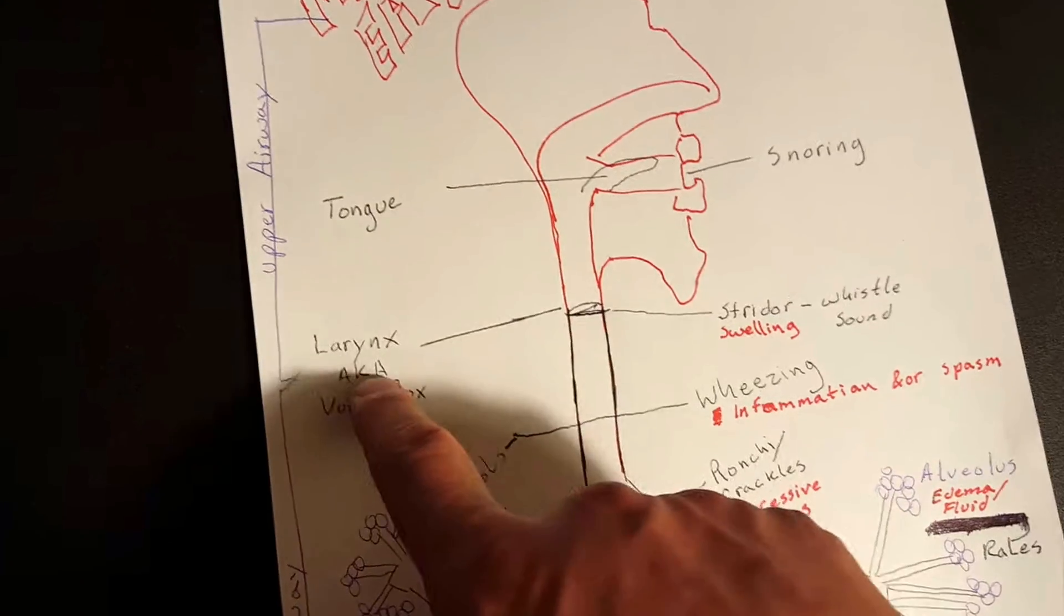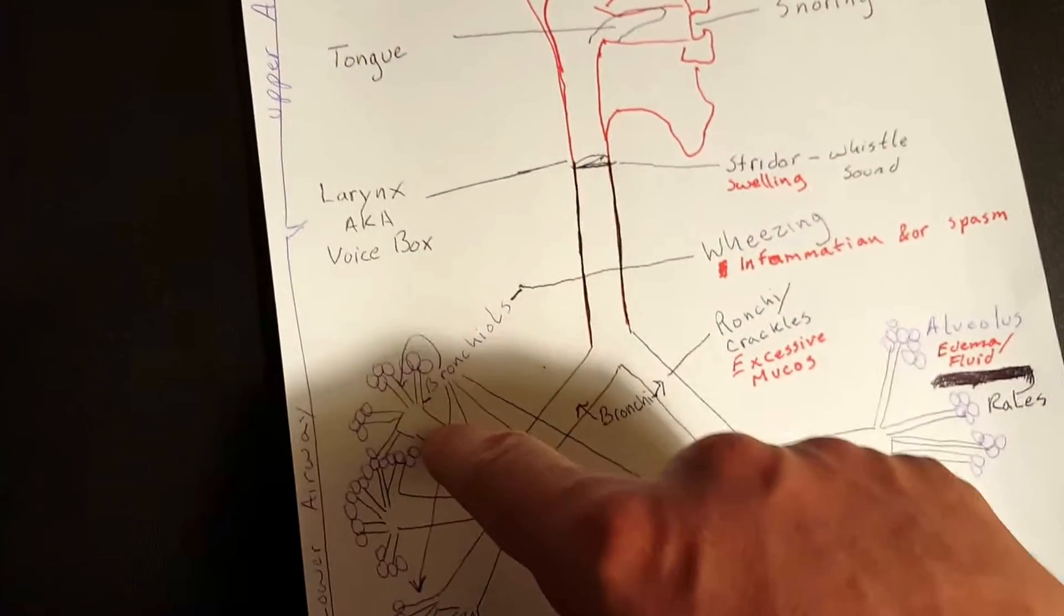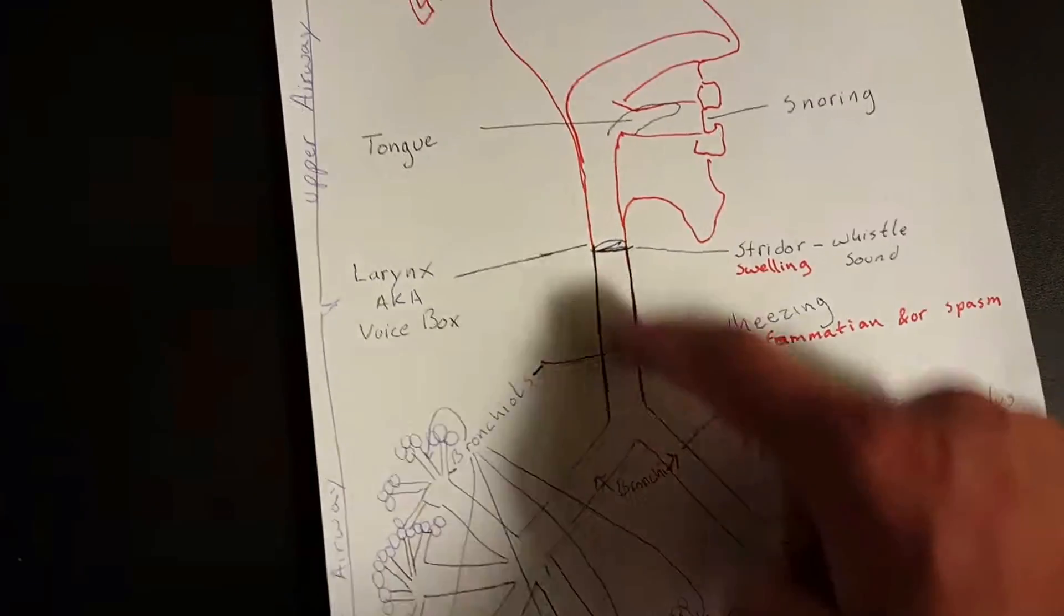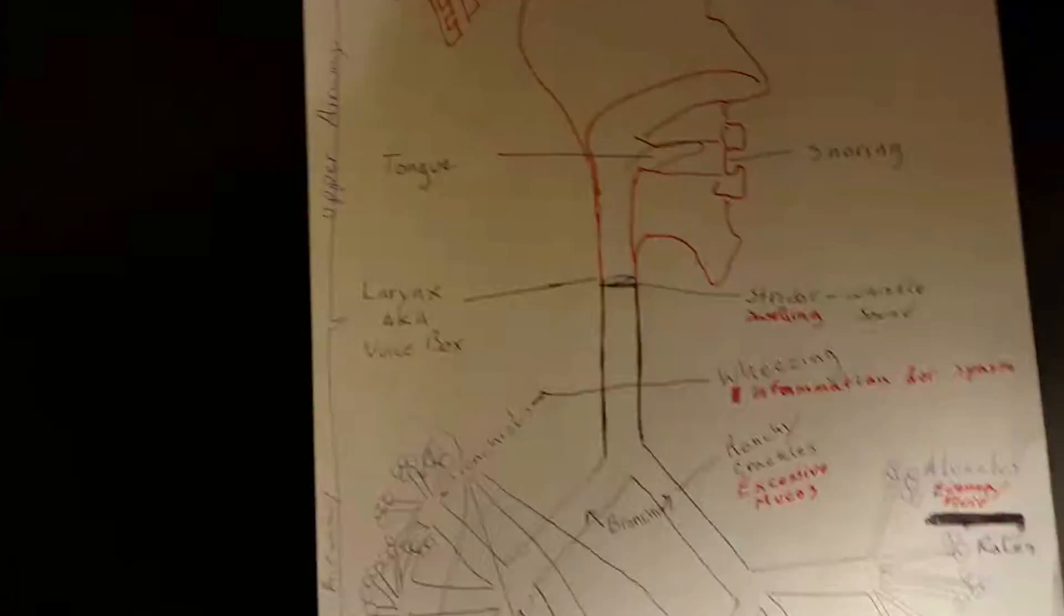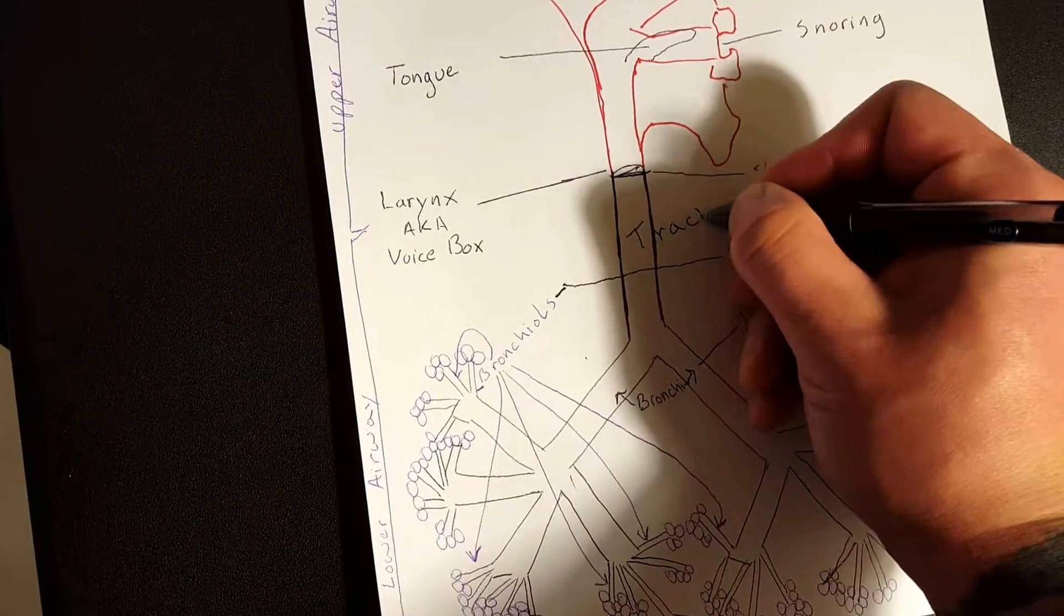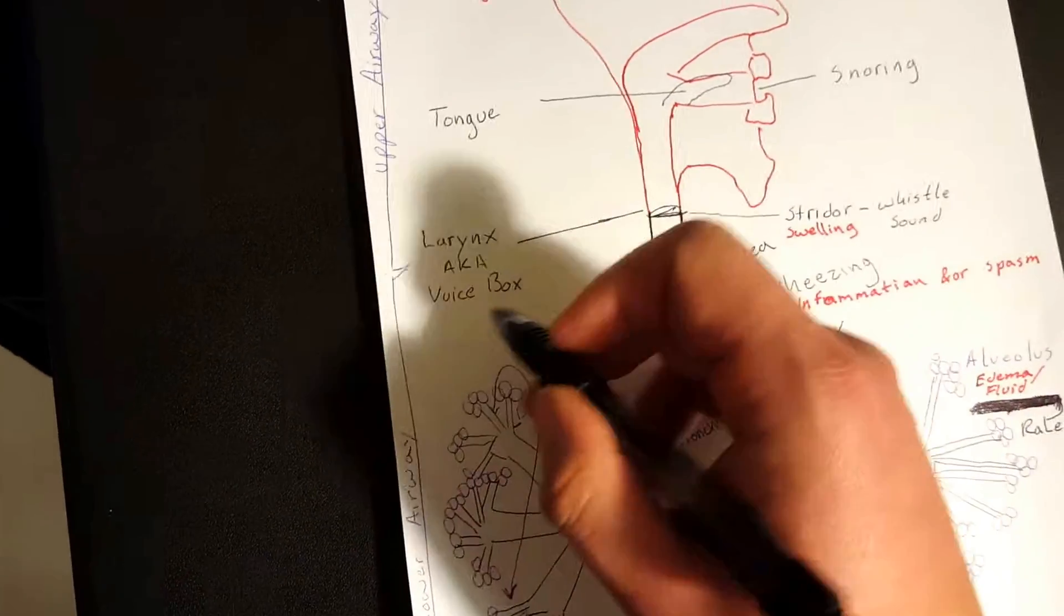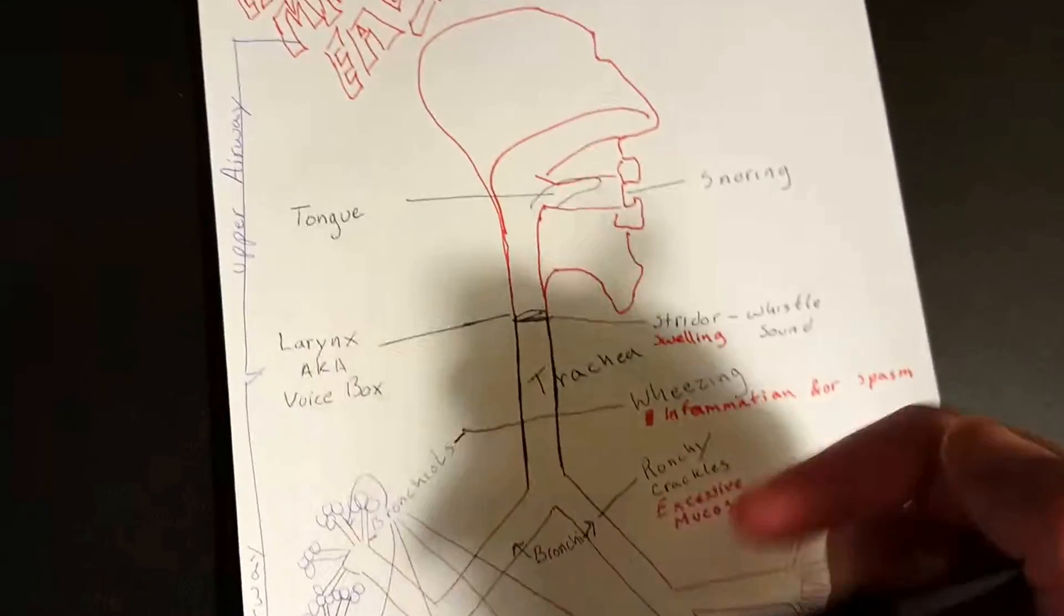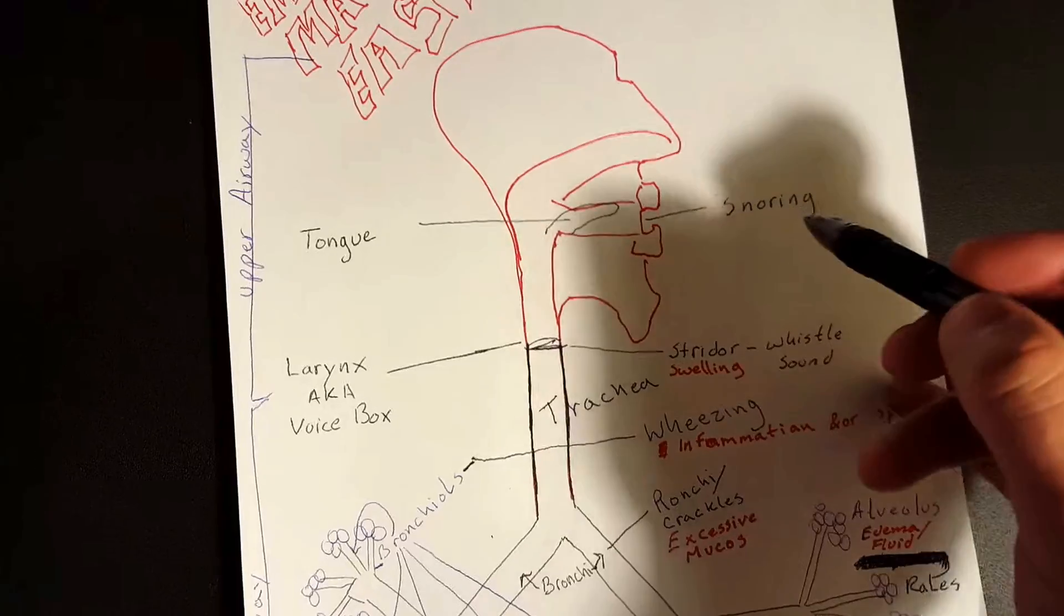So the division point between your upper airway and your lower airway is the larynx. So anything below the larynx is lower airway. And below your larynx you have your trachea. So your larynx is also known as the voice box. That's where your vocal cords are found. That's what lets you talk.